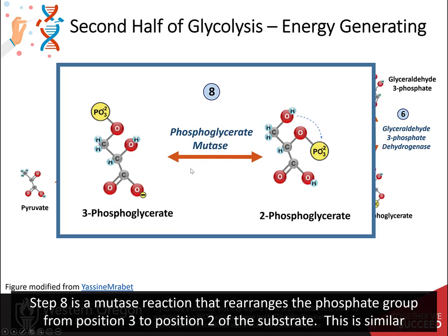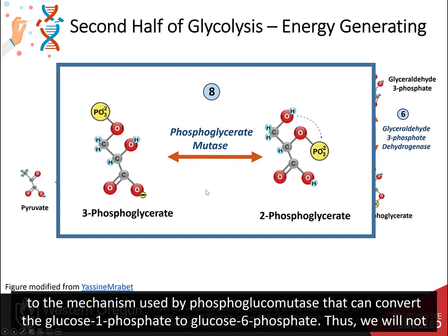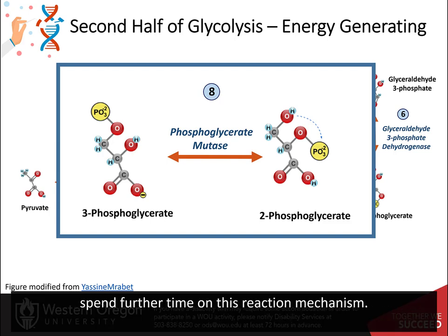Step 8 is a mutase reaction that rearranges the phosphate group from position 3 to position 2 of the substrate. This is similar to the mechanism used by phosphoglucomutase that can convert glucose-1-phosphate to glucose-6-phosphate. Thus, we will not spend further time on this reaction mechanism.